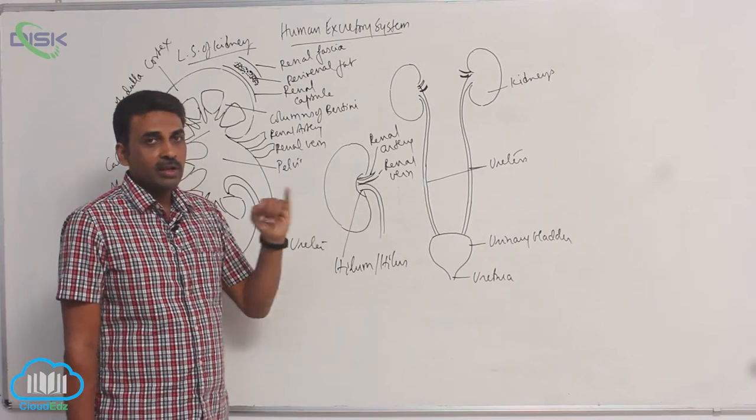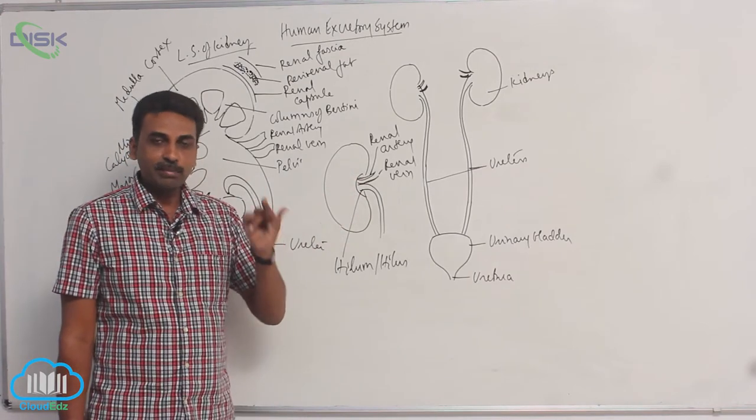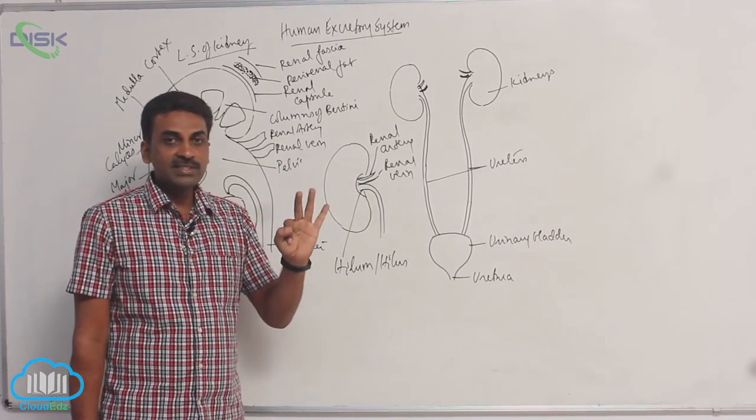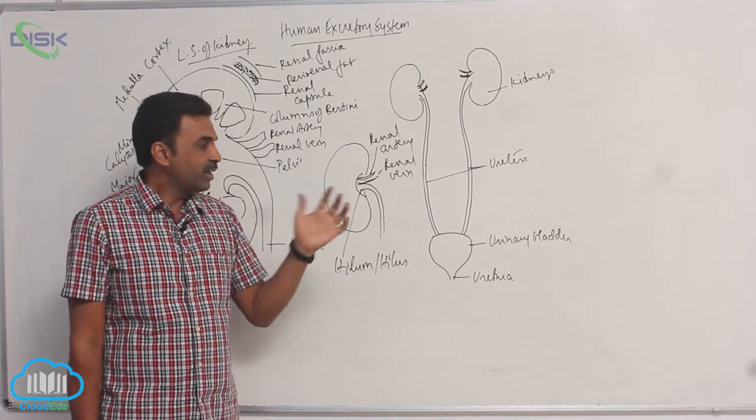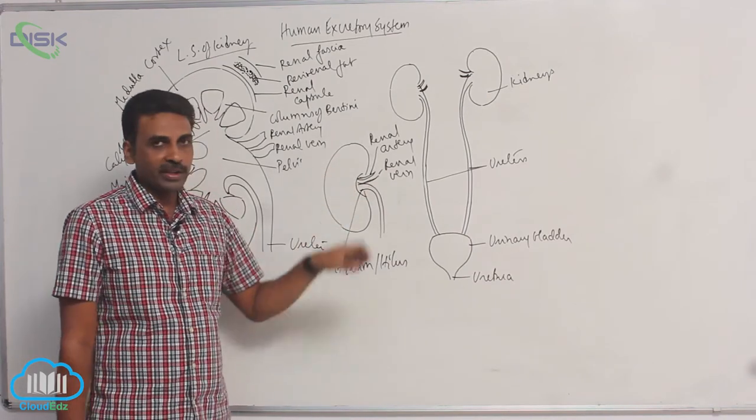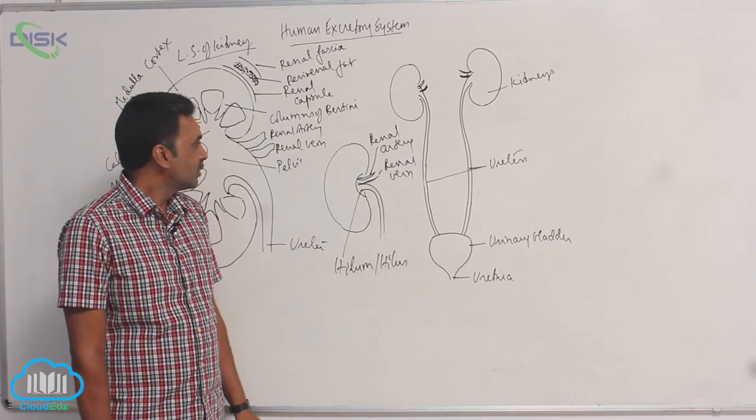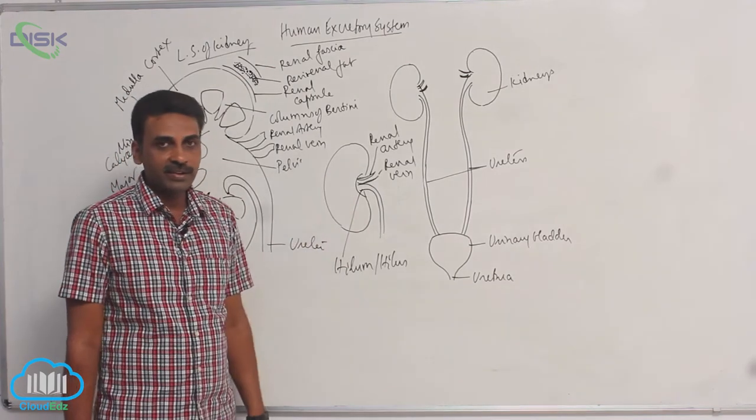Through hilum, renal artery, renal vein, that means blood vessels, lymph vessels, nerves and ureter, these are all opening in that area. So they are all entering inside to the kidney.